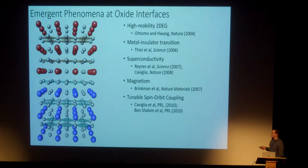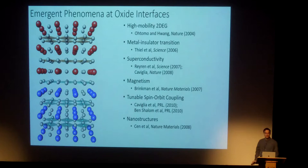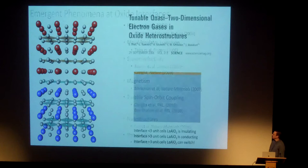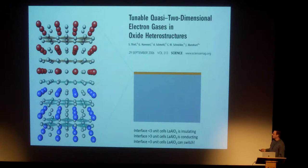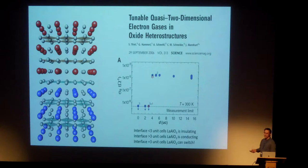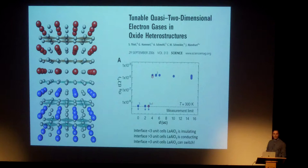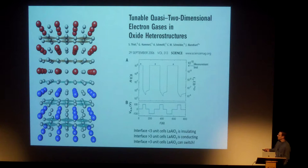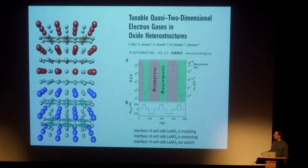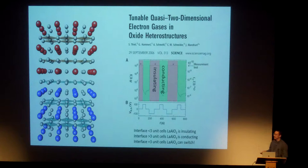We were inspired by Joachim Mannhart's work in 2006, where they looked at the conductivity of these films as a function of how many unit cells of lanthanum aluminate. They found that fewer than four unit cells was always insulating, and four or more was always conducting. Even more interesting, at the critical thickness they could switch it metastably between the insulating and conductive state by applying plus or minus 100 volts to the back of the strontium titanate substrate — essentially a large memory bit.